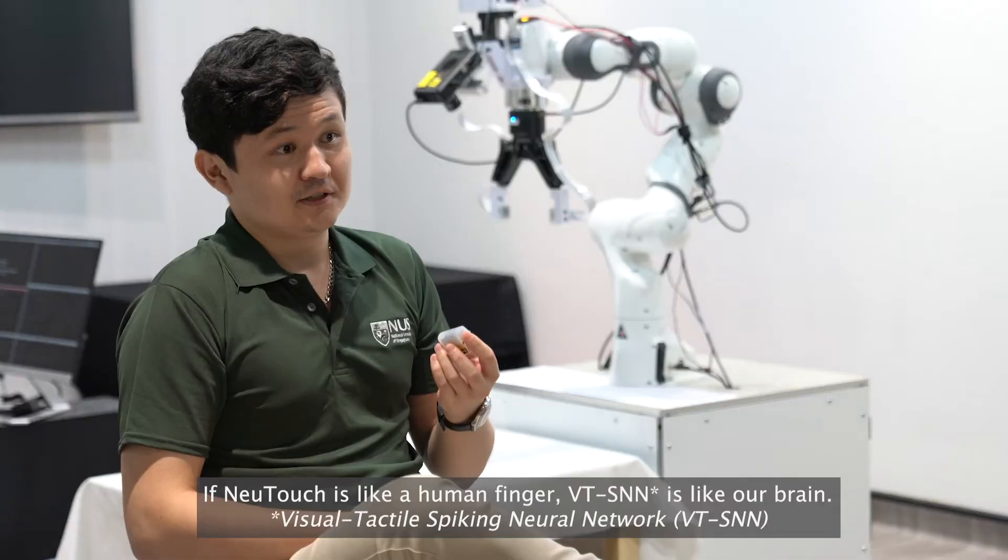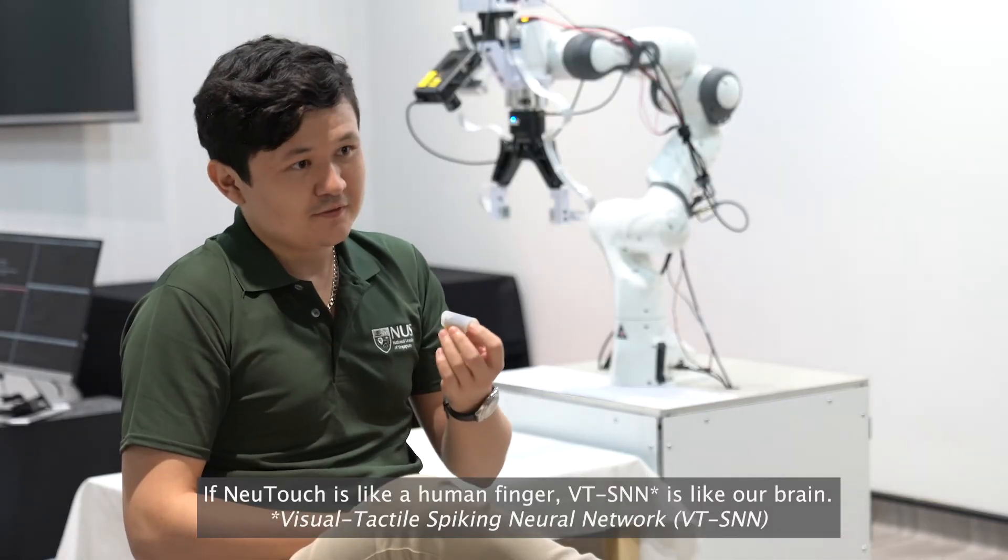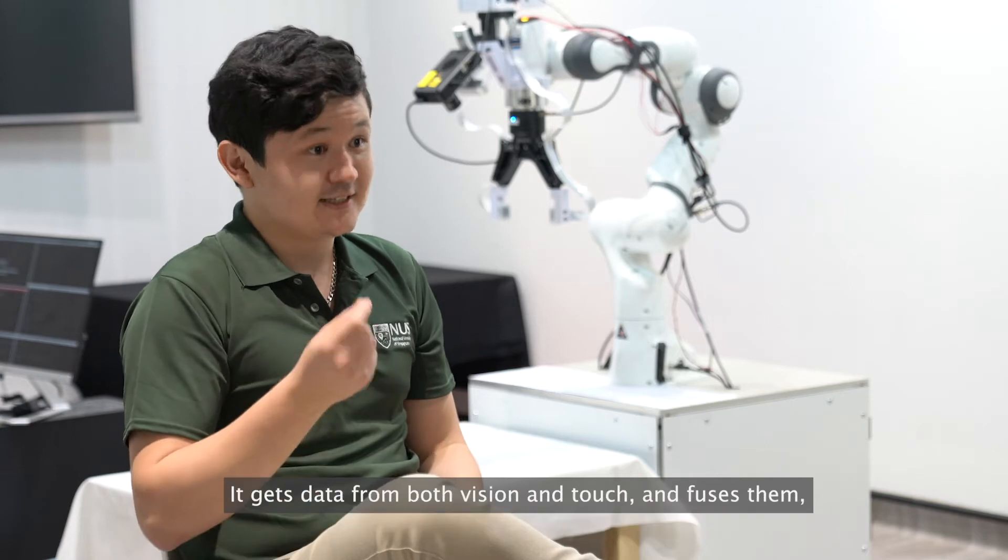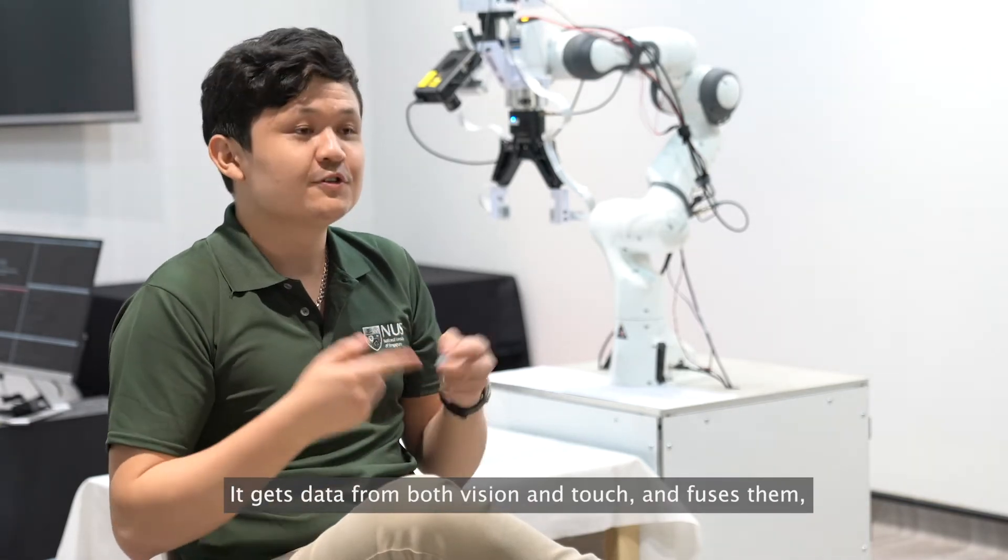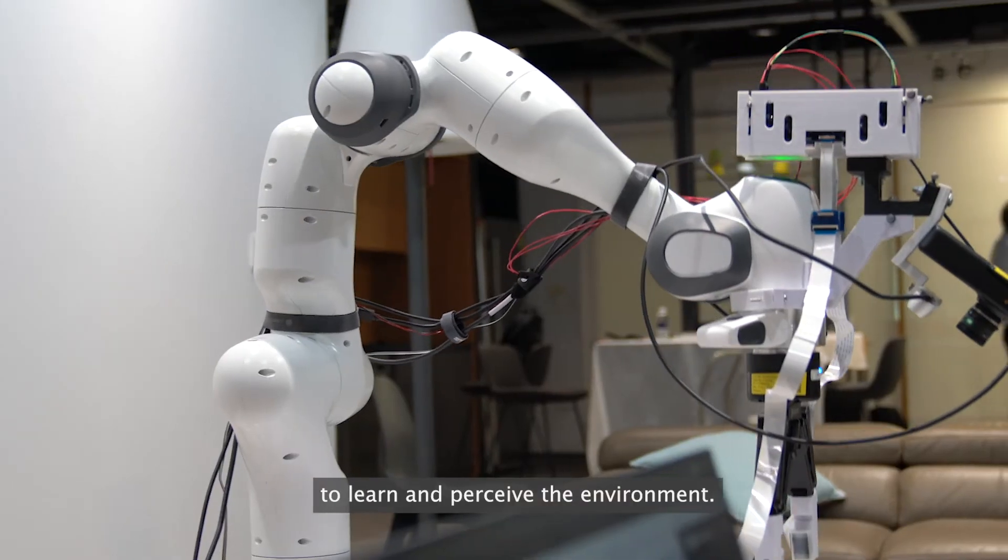If new touch is like a human finger, VTSNN is like our brain. It gets data from both vision and touch and fuses them to learn and perceive the environment.